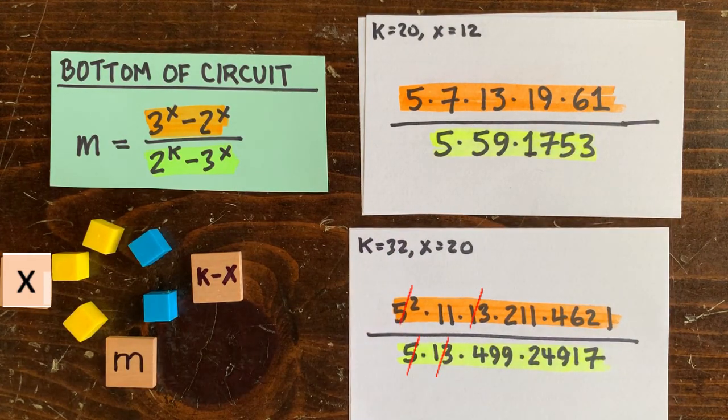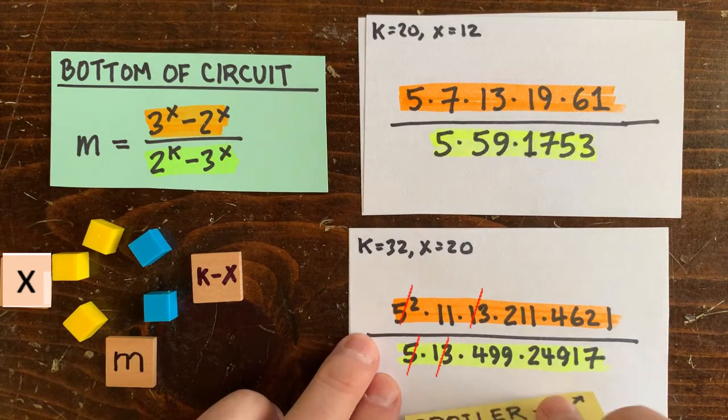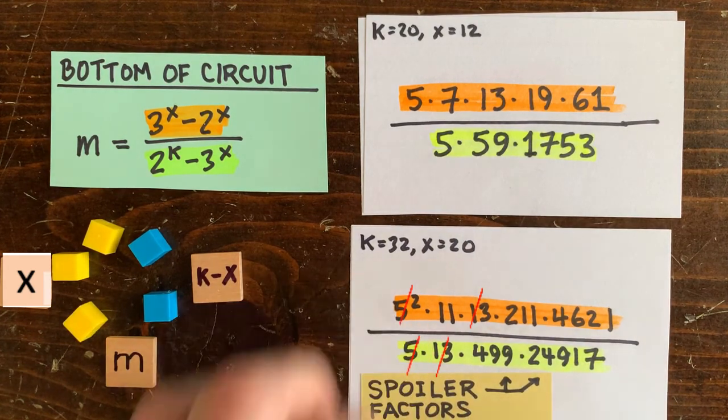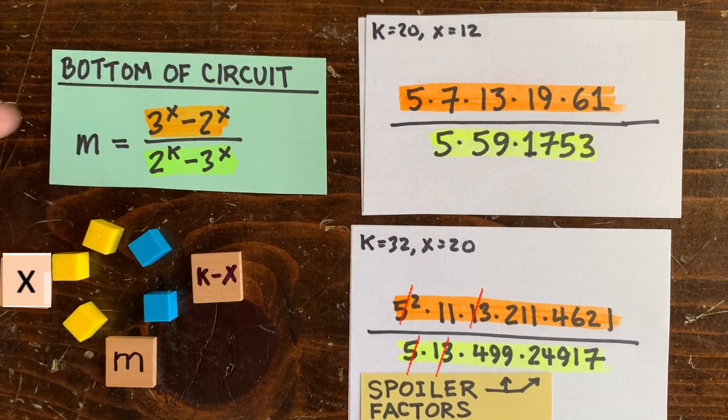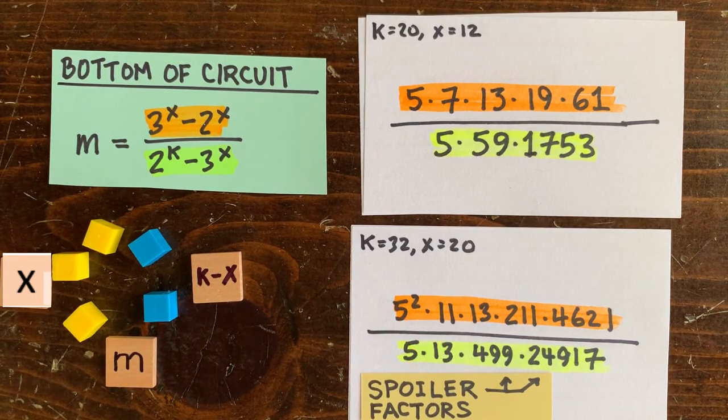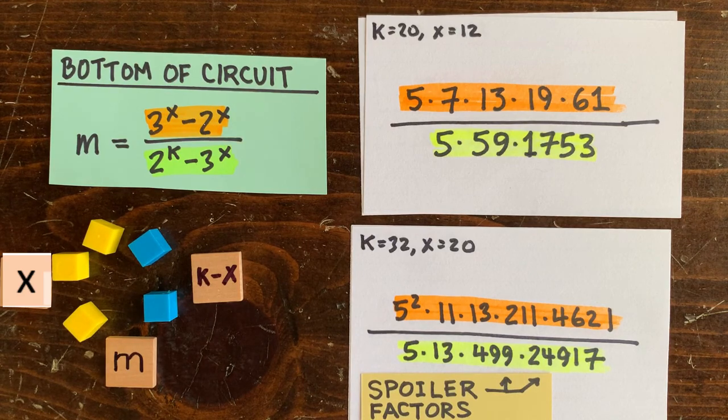Now we can cross off the 5 and the 13th, but we can't cross off the 499. I think a 499 is something like a spoiler factor. It keeps this ratio from being an integer and tells us that there's no circuit loop with k equals 32, x equals 20.